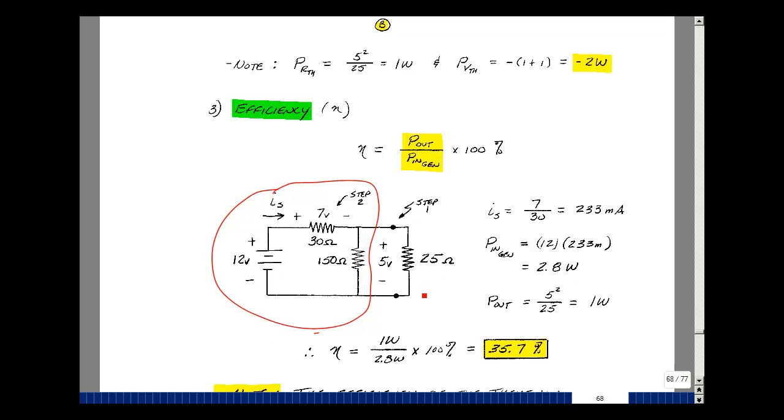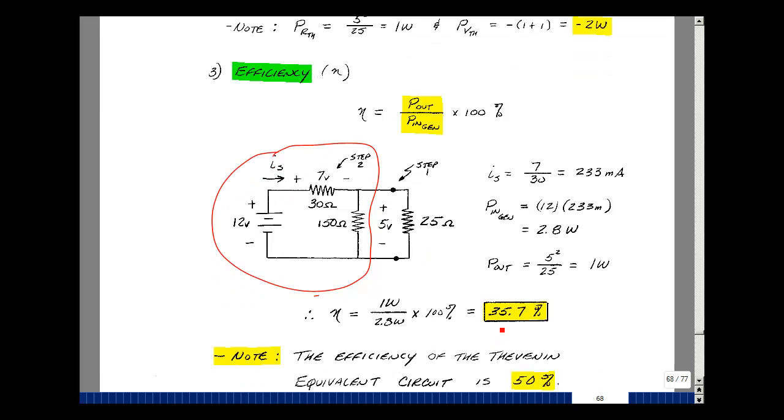So multiplying that by the 12 volts, I get 2.8 watts being generated by this battery, but I'm absorbing here 1 watt. So my efficiency is the ratio of those two times 100 percent, and that turns out to be 35.7 percent.